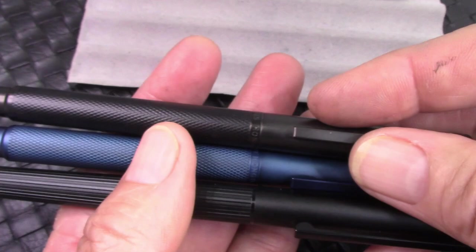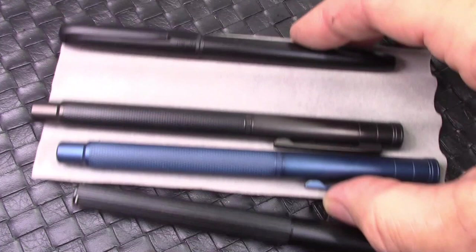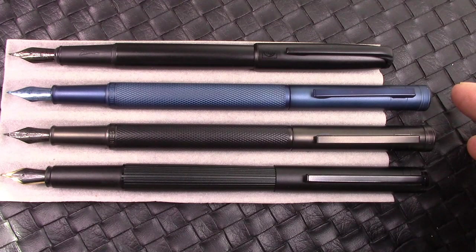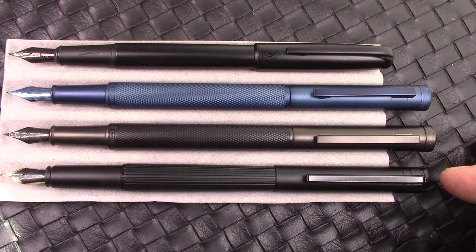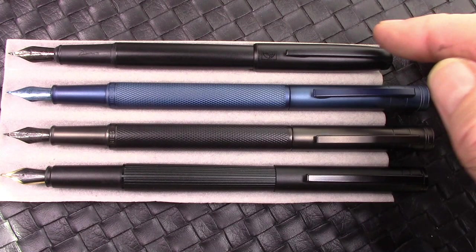All these three are nice and substantial. We're going to uncap them and take a look at the business ends. Here's an example of the four pens posted. The black forest ones are definitely the longest, but the H1 is not as short as I expected posted. The Picasso one posts deeply and very well, which is what we expected based on the design.